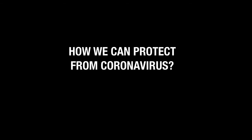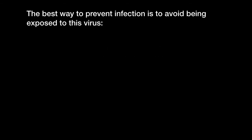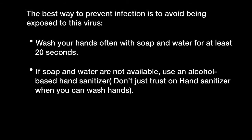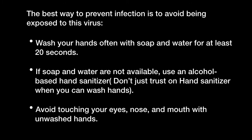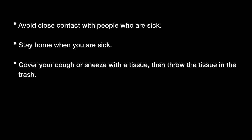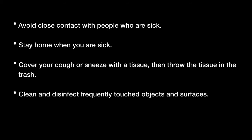How can we protect ourselves from coronavirus? The best way to prevent infection is to avoid being exposed to this virus. Wash your hands often with soap and water for at least 20 seconds. If soap and water are not available, use an alcohol-based hand sanitizer — don't just rely on hand sanitizer when you can wash your hands. Avoid touching your eyes, nose, and mouth with unwashed hands. Avoid close contact with people who are sick. Stay home when you are sick. Cover your cough or sneeze with a tissue, then throw the tissue in the trash. Clean and disinfect frequently touched objects and surfaces.